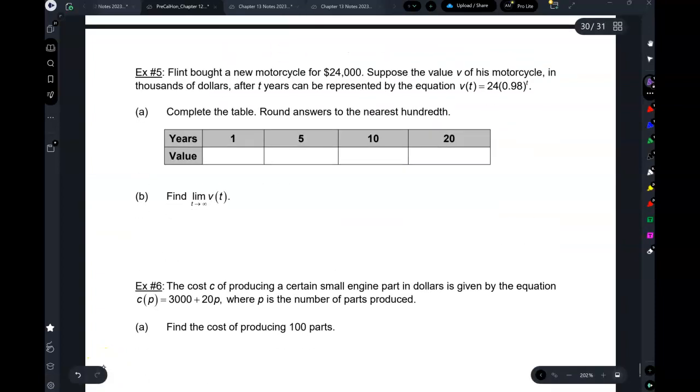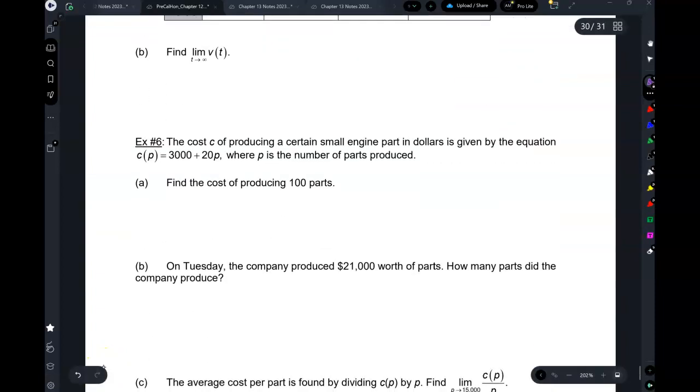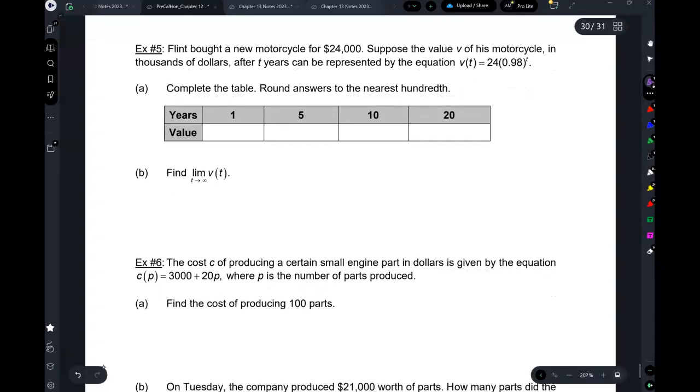Flip buys a new motorcycle for $24,000. Suppose the value of his motorcycle v in thousands of dollars t years after can be represented by this equation. Obviously this is an exponential equation, b is less than one, so this is exponential decay. Yeah, that makes sense because the car's value is decreasing, it's not increasing.